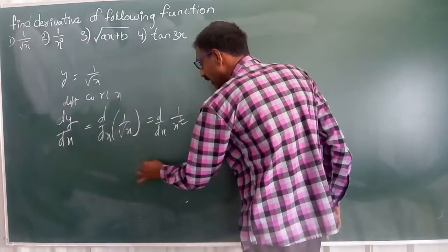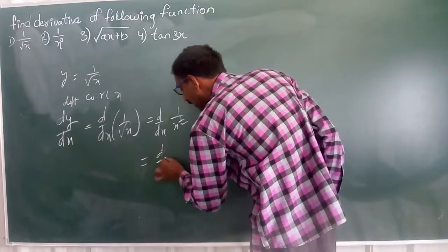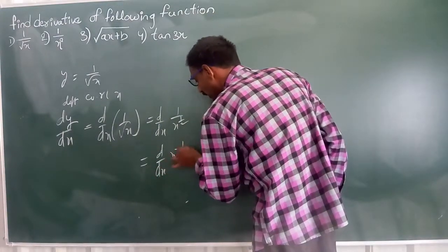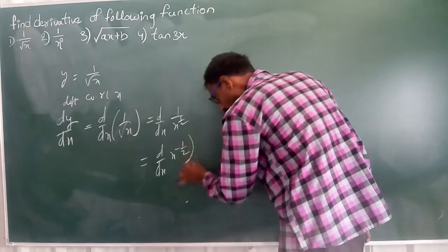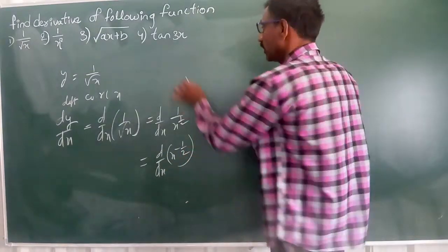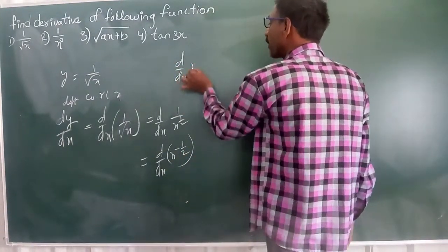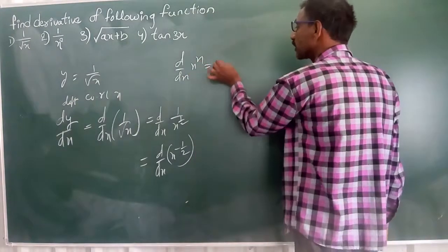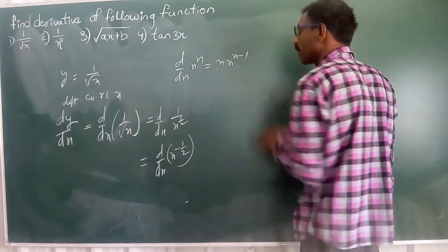Then this we can write d by dx of x power minus 1 by 2. Now d by dx of x power n, this is already proved. This is nothing but n into x power n minus 1.